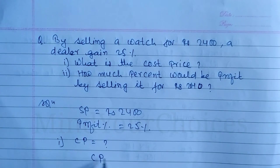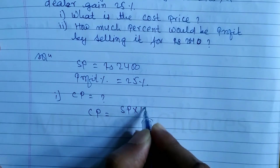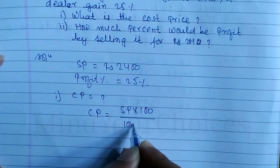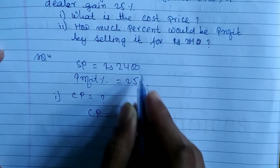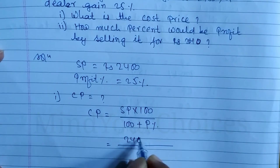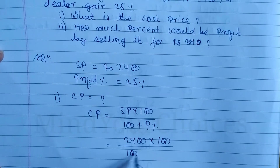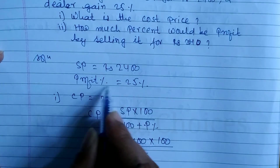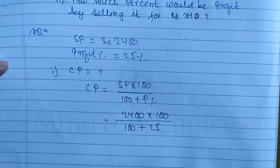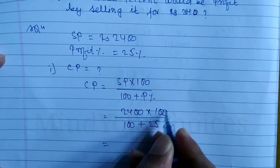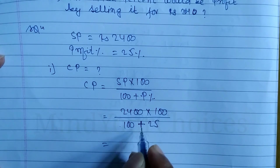To find CP, we use the formula: CP is equal to SP multiplied by 100, divided by 100 plus profit percent. The SP value is 2400. So we write: CP = 2400 × 100 divided by 100 plus 25. Percent sign is not needed inside the formula, just write 25.